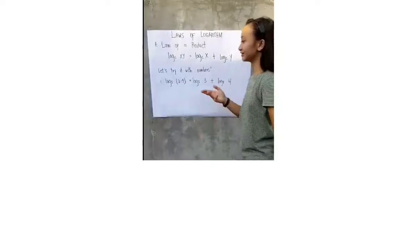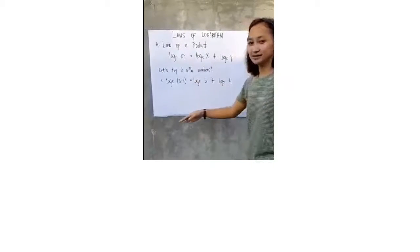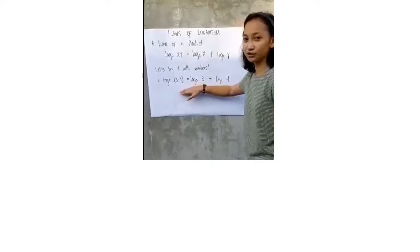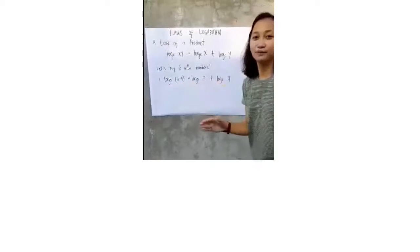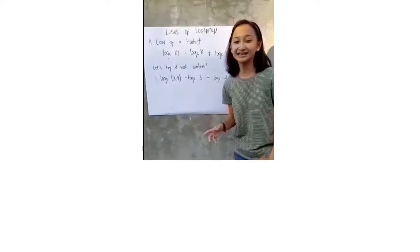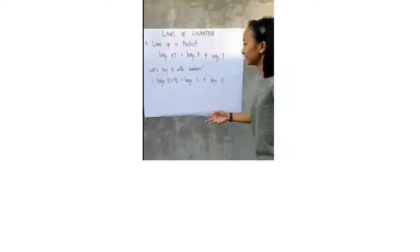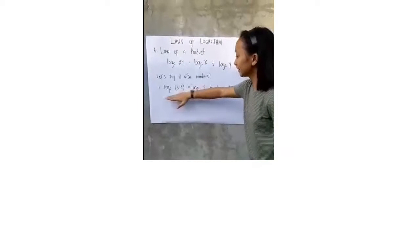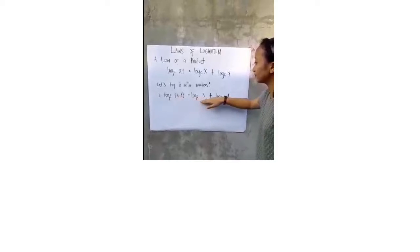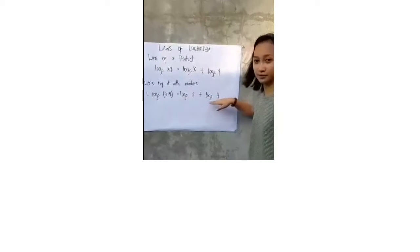Now, let's try it with numbers. In this example, we have logarithm of 3 times 4 to the base 5. Always remember that the logarithm of a product of numbers is the sum of the logarithms of the numbers. So, logarithm of 3 times 4 to the base 5 is equal to logarithm of 3 to the base 5 plus logarithm of 4 to the base 5.